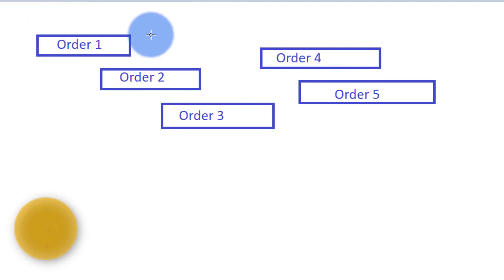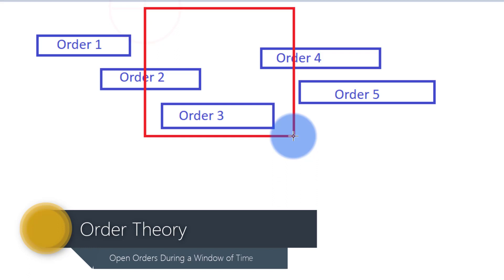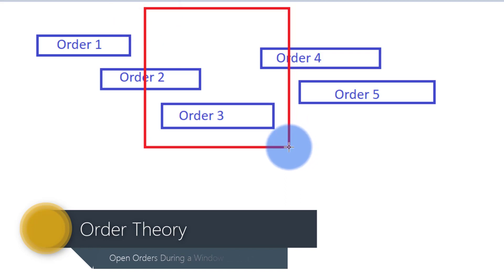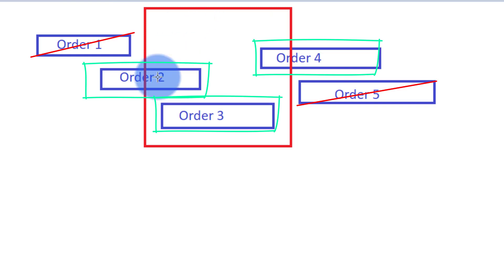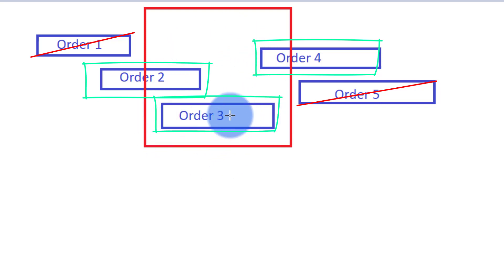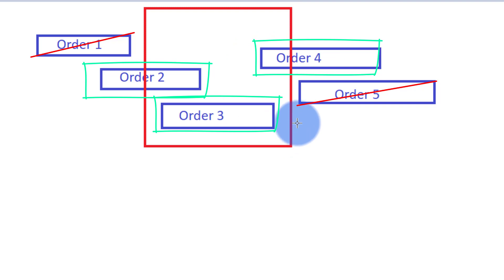Let's take a situation where we're looking at orders over a period of time. Within this window period, if I look at all the orders that are open, order two is open within this period. Order three was open and closed within this period, but I still see order three as being open within this period range. Order four is also open within this period. Order three is the big one that's included as being open, even though it's delivered at the end of the period.